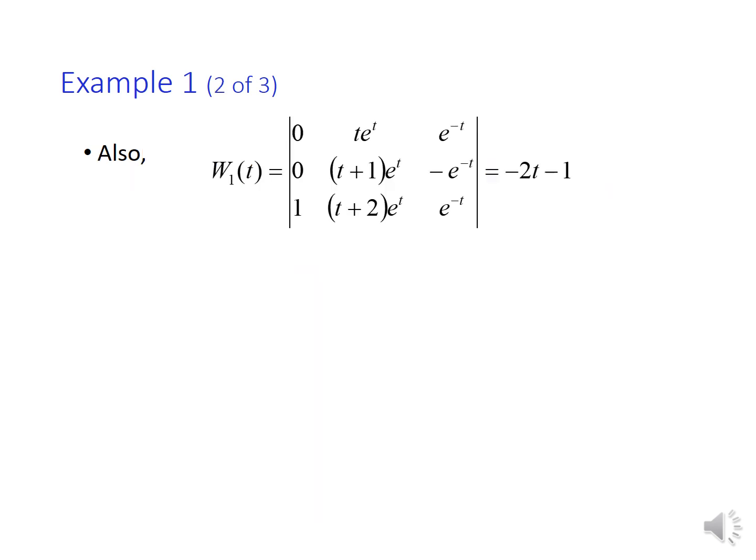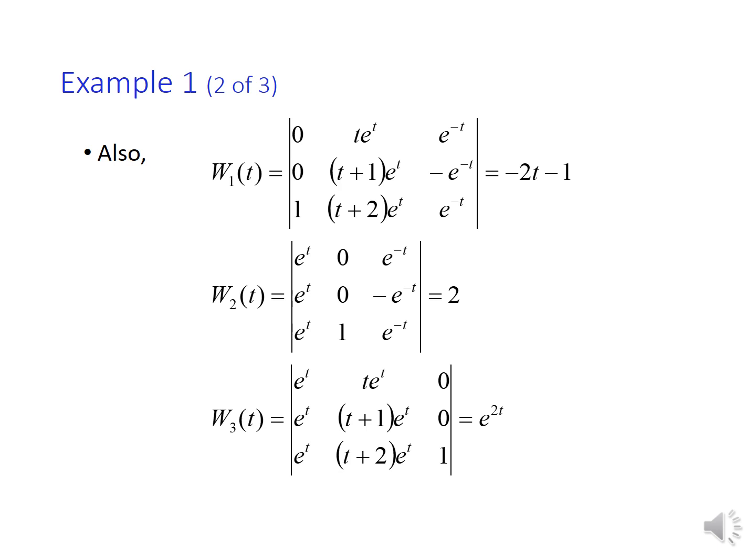Now we need to find w1, w2, and w3 as well. To compute w1, we first write down the Wronskian of y1, y2, and y3, then replace the first column by the 0, 0, 1 vector and compute the corresponding determinant. w2 and w3 are given in a similar way. For w2 we replace the second column by the 0, 0, 1 vector. And for w3 we replace the third column by the vector 0, 0, 1 this time and compute the resulting determinant.